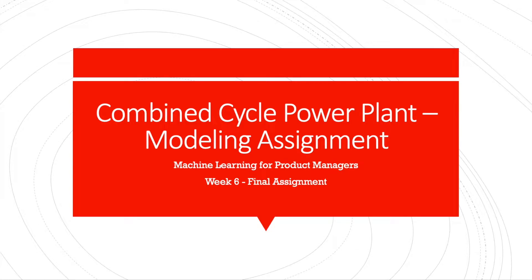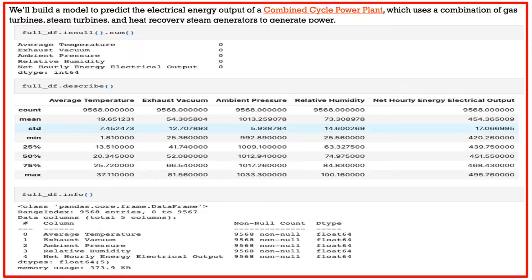Today we are going to walk over the final assignment for the course on Coursera called Machine Learning for Product Managers. We're going to build a model to predict the electrical energy output for a combined cycle power plant which uses a combination of gas turbines, steam turbines, and heat recovery steam generators to generate power.